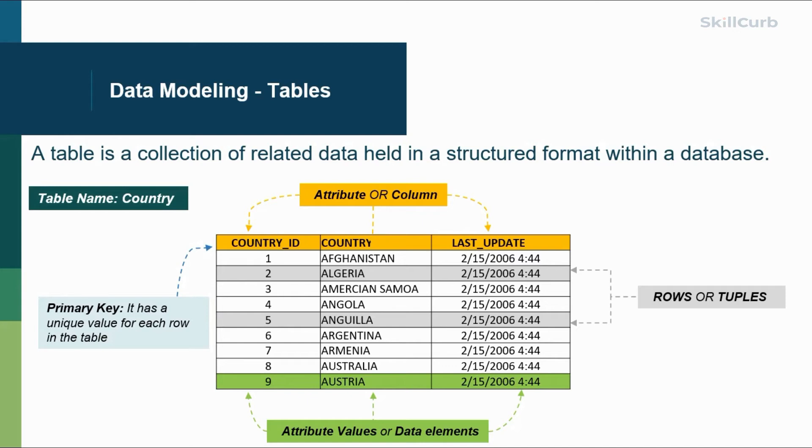Data is added as rows or tuples. So if you look horizontally, country ID 2, Algeria, and the last update value - that row becomes one record in the database. Another important concept is primary key. Each of these rows that you see are identified by a unique identifier.